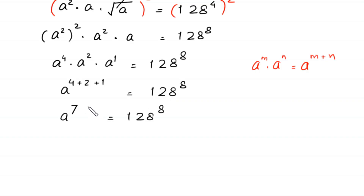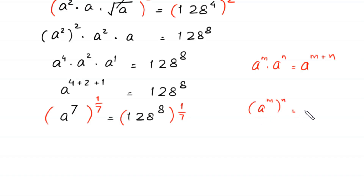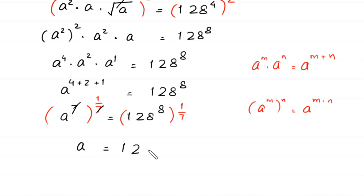Now we take the power 1 over 7 on both sides of this equation. By using the power rule (a^m)^n = a^(m·n), we multiply this power 7 by this power 1/7 — this 7 cancels out with this 7. On the left side we are left with a is equal to 128 to the power 8 times 1/7, which is 8 over 7.